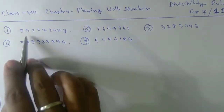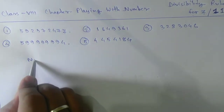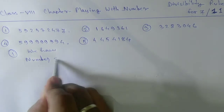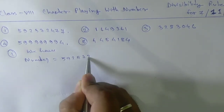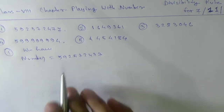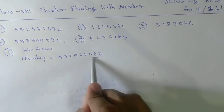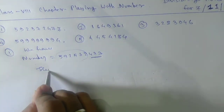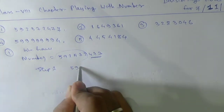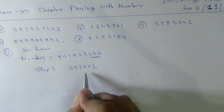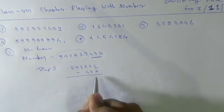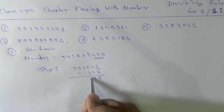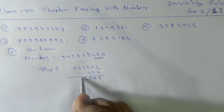Let's first go for 7. Take the number 592572477. The target is that the last 3 digits will be subtracted from the remaining part. Step 1: take 592572 and subtract the last 3 digits 477. We get 592095.